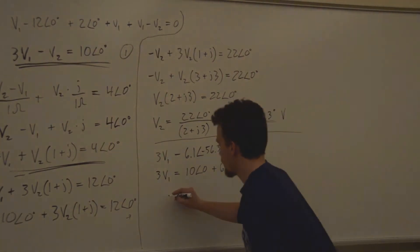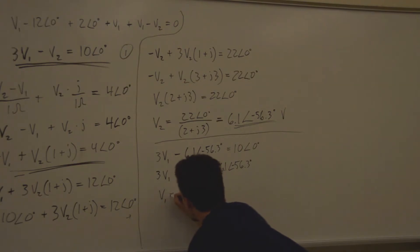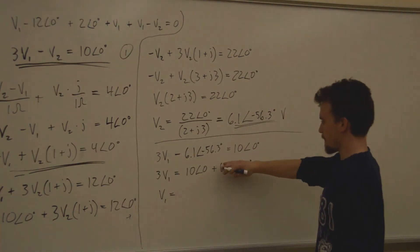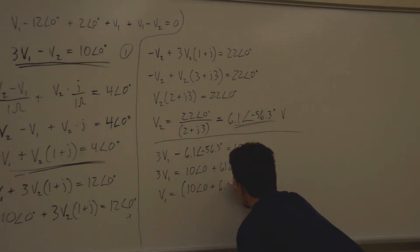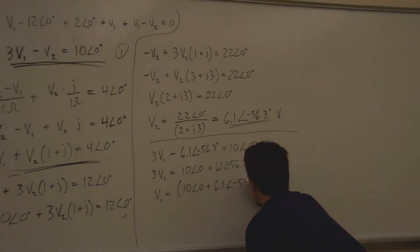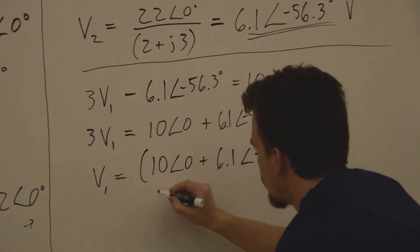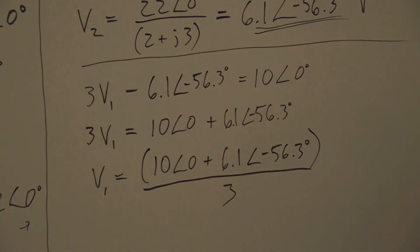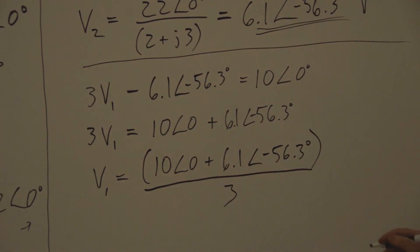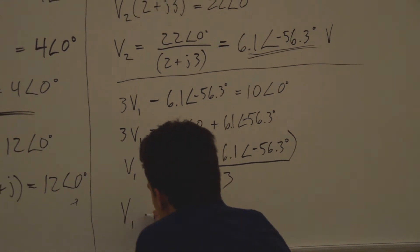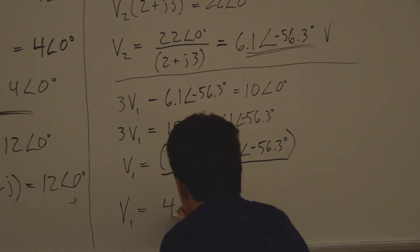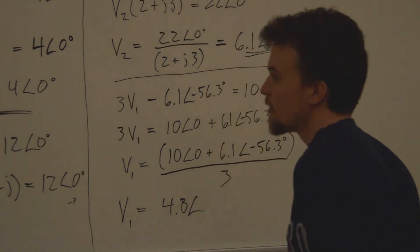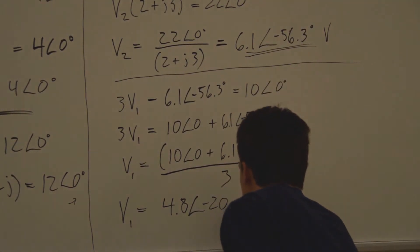V1 equals (10∠0° plus 6.1∠−56.3°) divided by 3. Typing this into your calculator gives V1 equals 4.8 volts with a phase shift of negative 20.8 degrees.